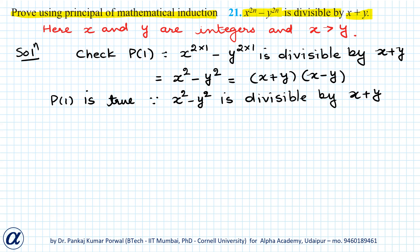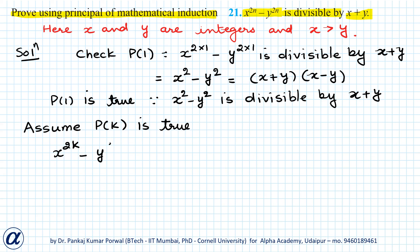The next step is the inductive step, where we assume that P(k) is true and using that we have to prove that P(k+1) is true. So let's assume P(k) is true. I can get the statement for P(k) by substituting n equals k, giving x to the power 2k minus y to the power 2k is divisible by x plus y.